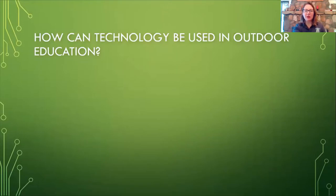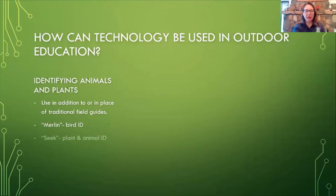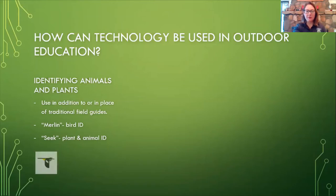So you might be thinking, how can technology be used in outdoor education? You can use it to identify animals and plants through some apps. You can also use those apps in addition to or in place of field guides. I use them in addition to — students have their regular field guides plus an app they can look things up with. Primarily I use the app called Merlin, a bird ID app. There's also an app called Seek, which identifies animals, plants, and fungus just by using the camera on your device.